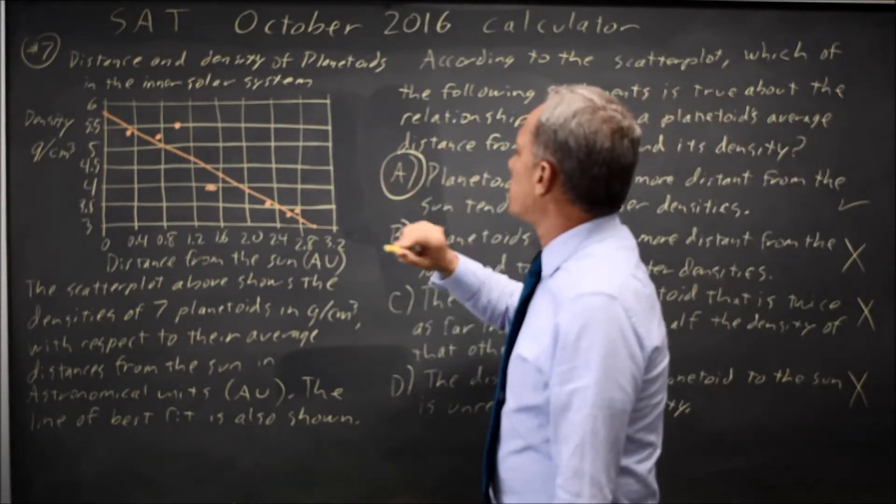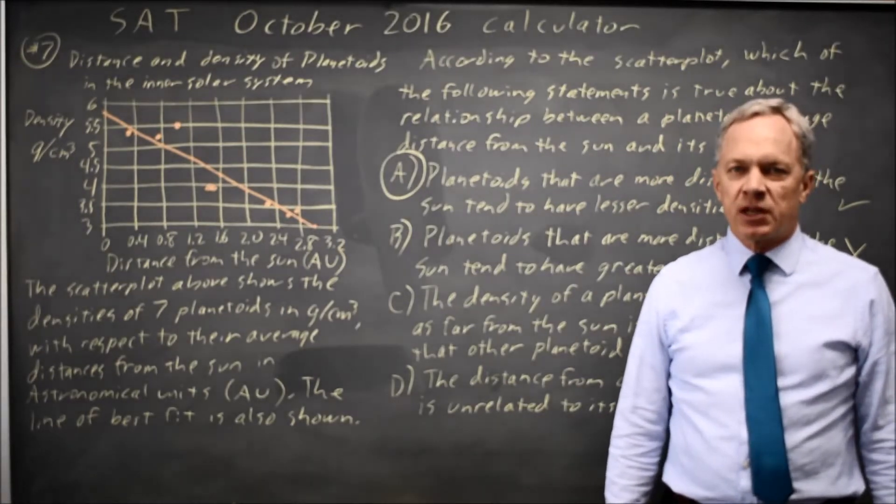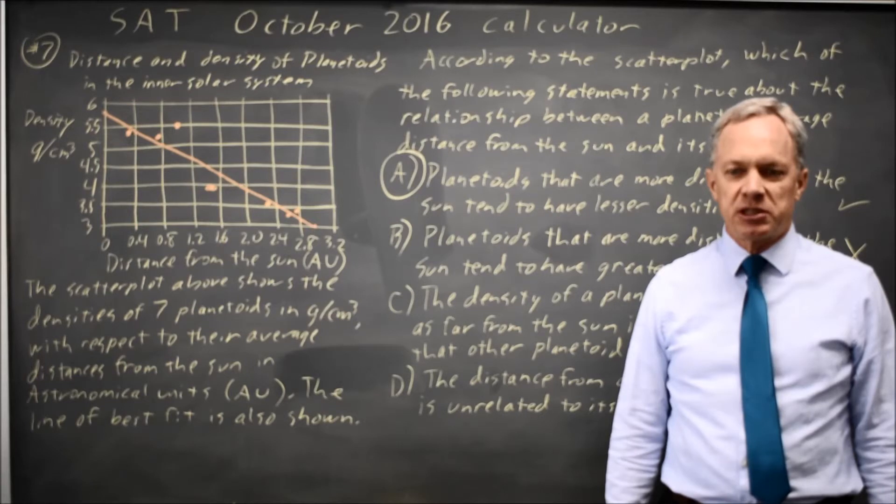The only choice that matches our graph is choice A, so that would be our answer. In this sort of question, I'd like to cross out wrong answers until only one option is left.